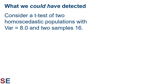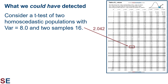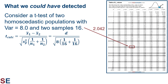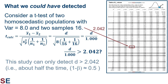Let's look at the same situation but with a study twice as big. Consider a t-test of two populations with variances of 8 and two samples of size 16. For two samples of 16, the degrees of freedom value is 30, giving a t-critical value of 2.042 for an alpha value of 0.025. Substituting d for the detectable difference, this t-calculated value rejects the null hypothesis when d divided by 1 is larger than 2.042. This study can therefore detect differences larger than 2.042. Note that this study was twice as large, but the detectable difference didn't get half as big — it's about two-thirds as big.